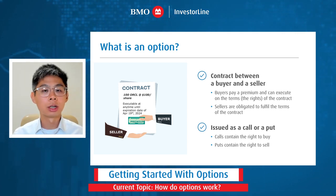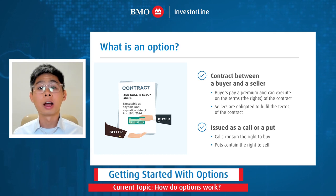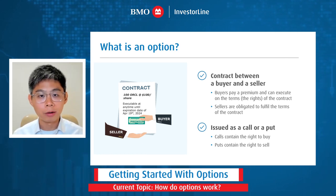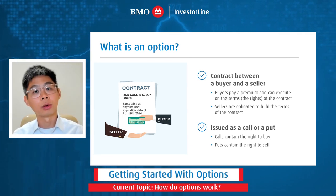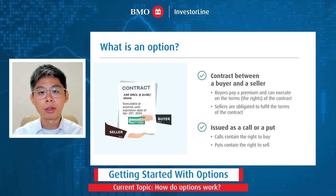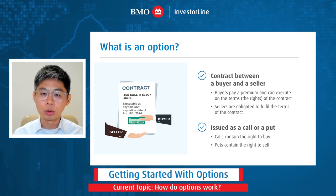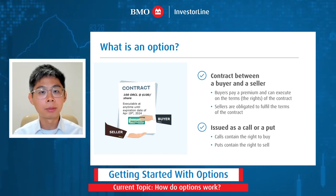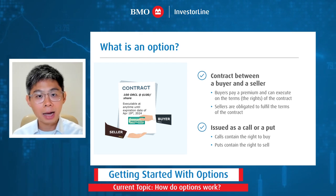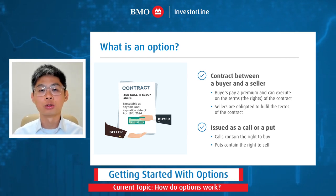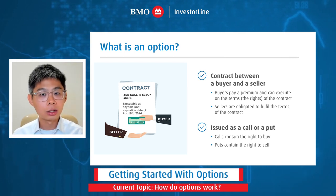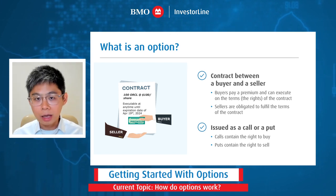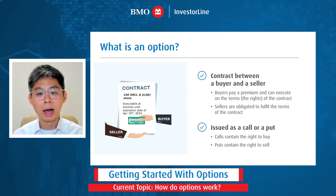To better understand this, think of it like driving a car. The buyer is the driver — they maintain control, they pay for that right, and they choose whether to go left or right. As a seller, you are effectively in the passenger seat, at the whims of where the driver wants to go. So as a seller, you have the obligation to fulfill the contract if the buyer chooses to exercise their rights.